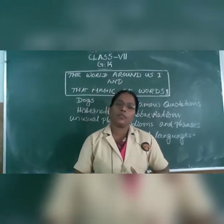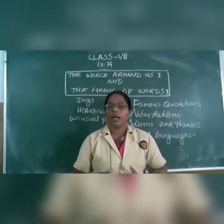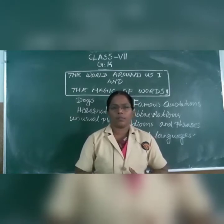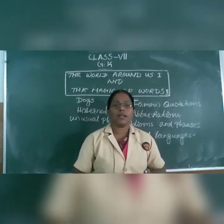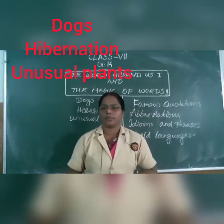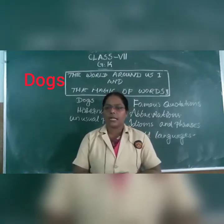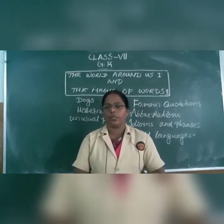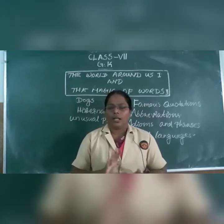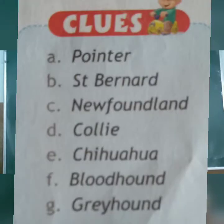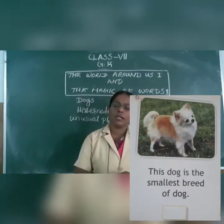The first lesson is The World Around Earth, which is divided into three parts. First one: Dome. Second one: Hibernation. Third one: Ocean Planes. The Dome is the most adaptable animal to humans. There are more than 500 million dogs in the world. Students, look at the picture in your book and find out what kind of dog it is and write the first letter in the column.